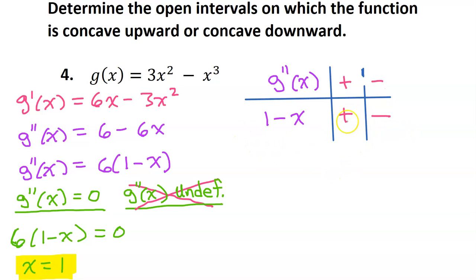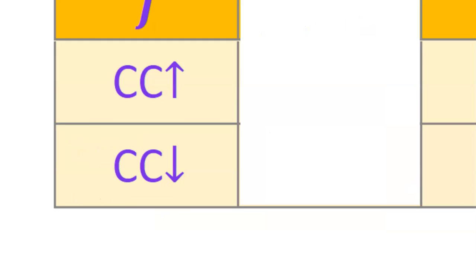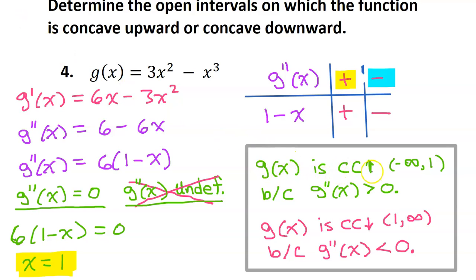Usually we will have more than one factor, so we have to figure out the overall sign by combining factors. We have learned that where F double prime is positive the function will be concave up, and where F double prime is negative the function will be concave down. So the original function G will be concave up on this interval and concave down on this interval. G of x is concave up from negative infinity to 1 because G double prime is positive. G of x is concave down from 1 to infinity because G double prime is negative. Make sure you include this justification.